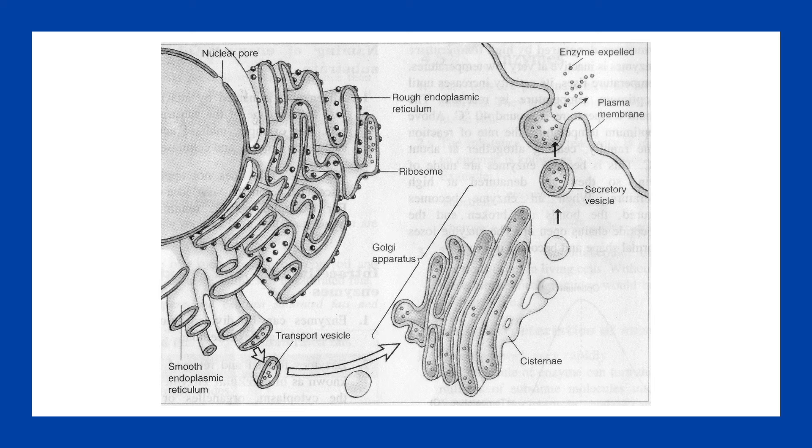And how most enzymes are released is by exocytosis. So the vesicle, the secretory vesicle, fuses with the cell surface membrane. And from that, the enzyme is ejected into the bloodstream. And then the enzyme is carried around the blood to the target cell, where it will then go in and catalyze the reaction that's needed.